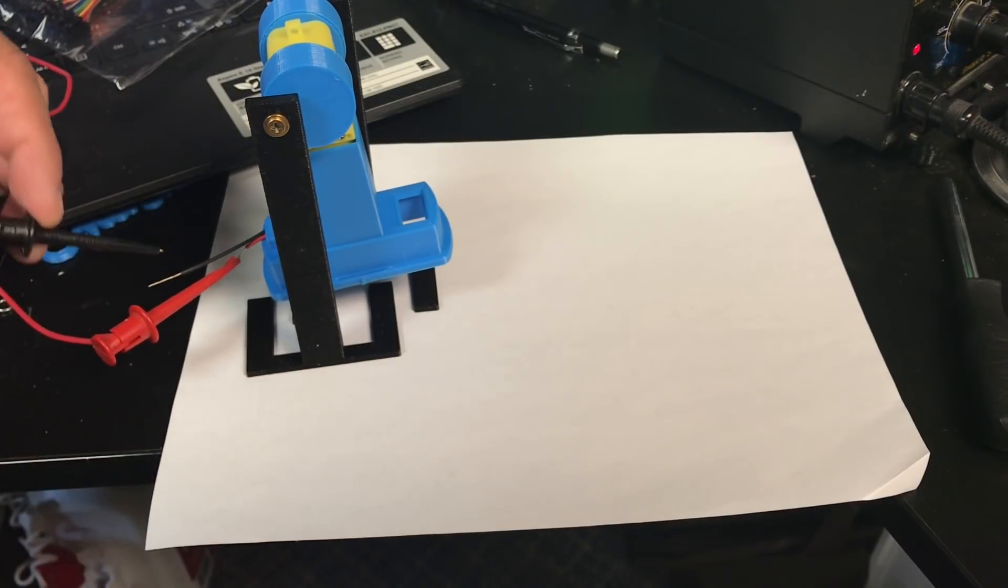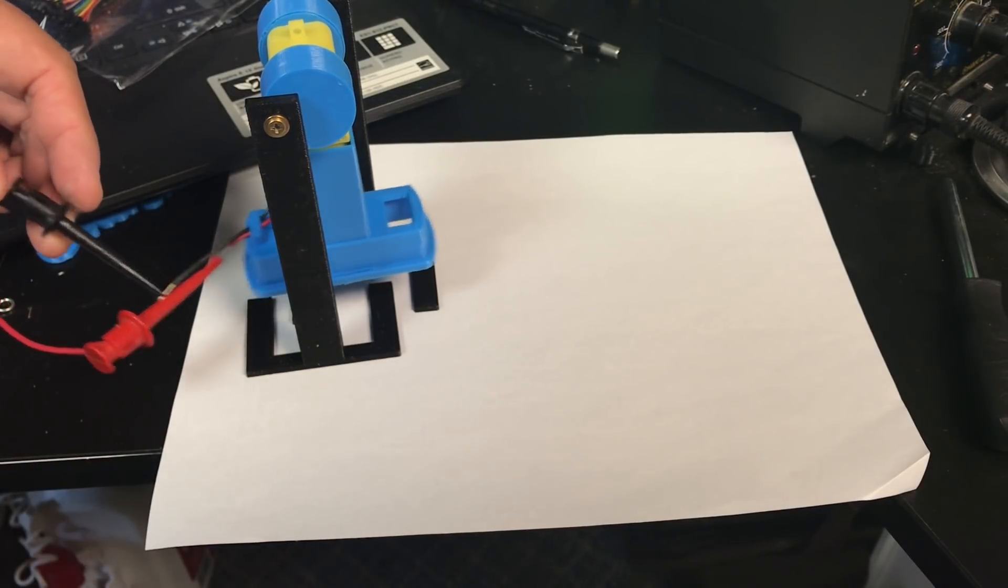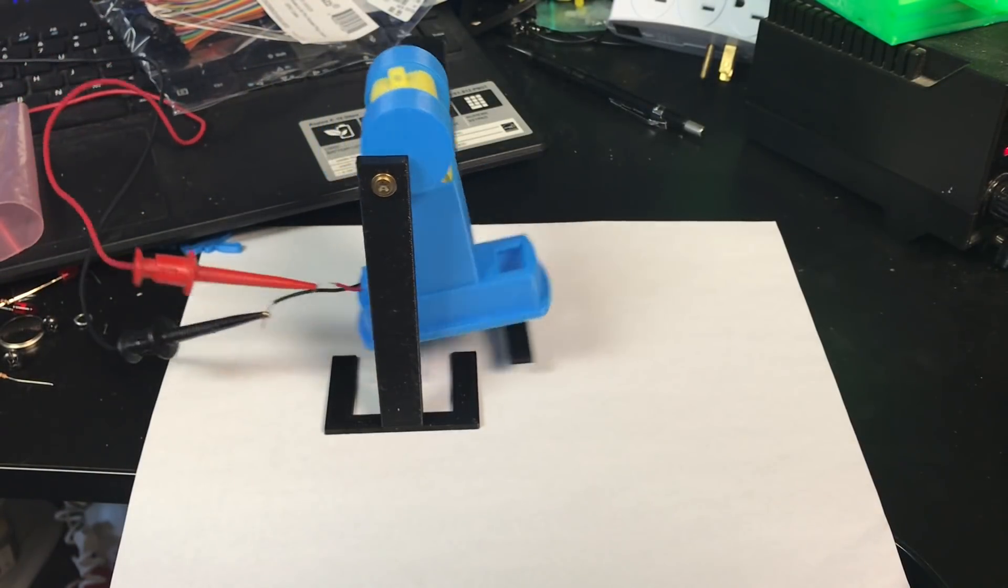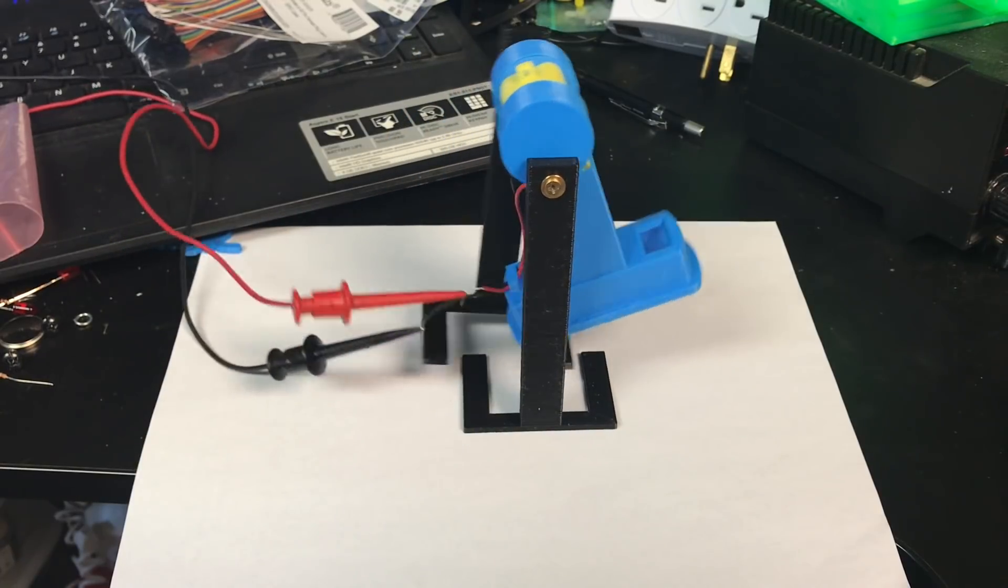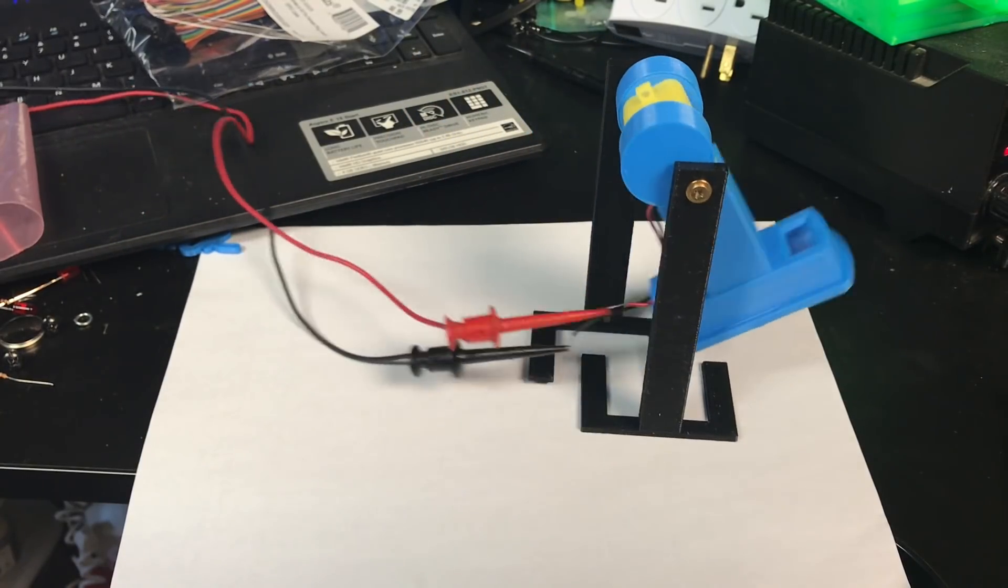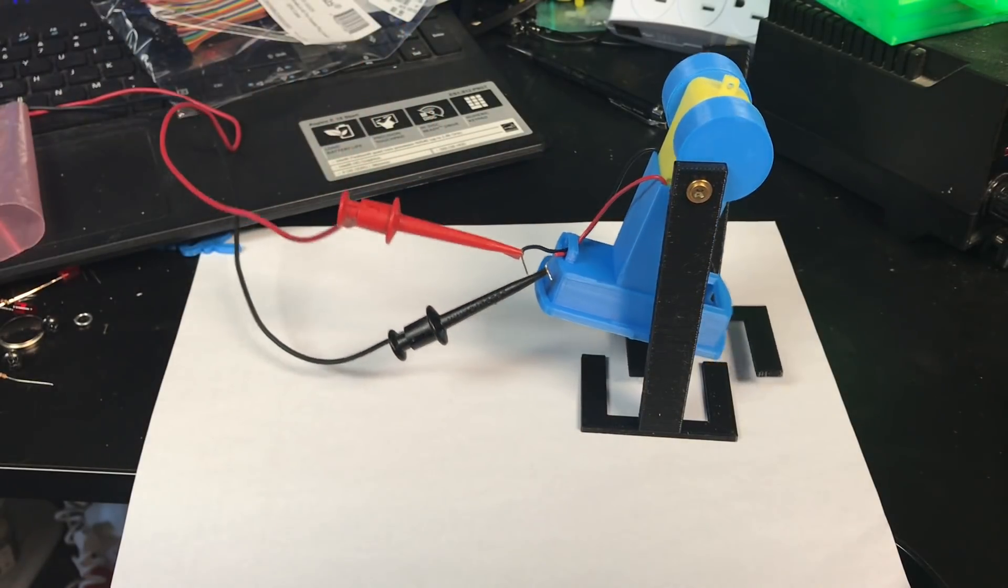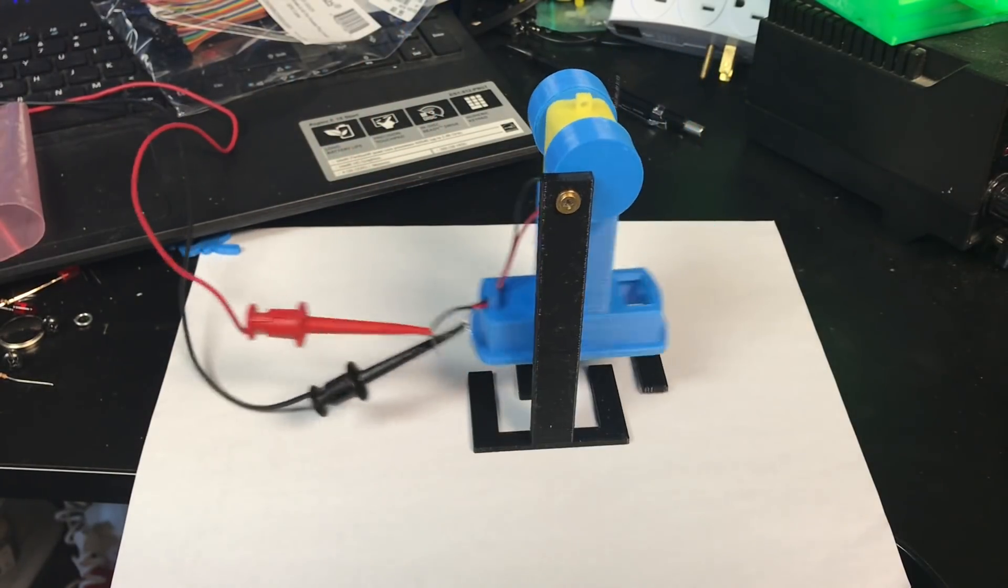I used the power supply set to three volts connected positive and negative to the wires of the motor. And when I turned on the power supply this thing walked. Now the wires are kind of throwing off the weight a little bit but it seems to be working. Now if I reverse the wires this thing should walk backwards. And sure enough it walks backwards.